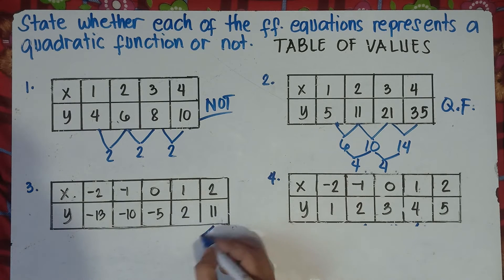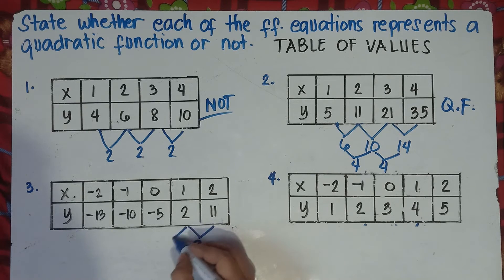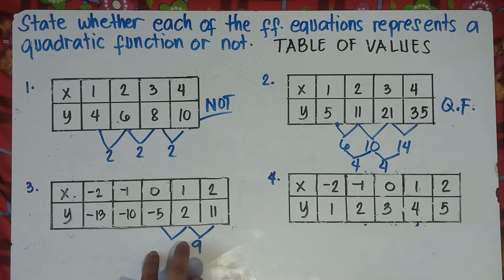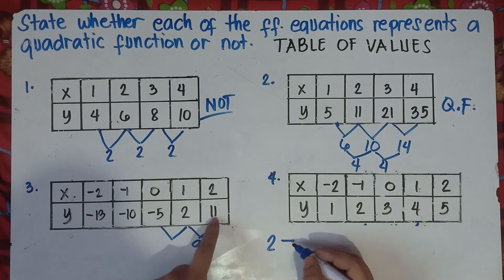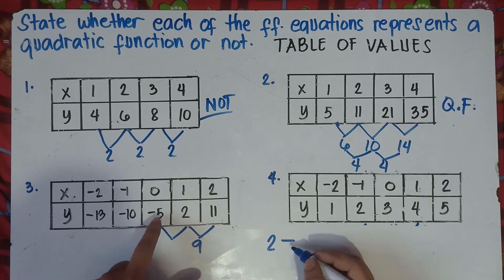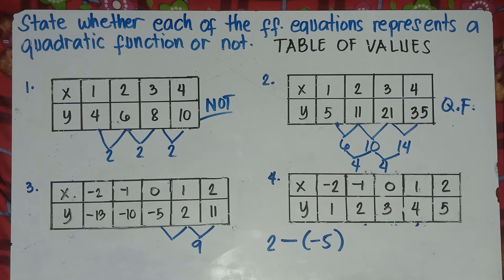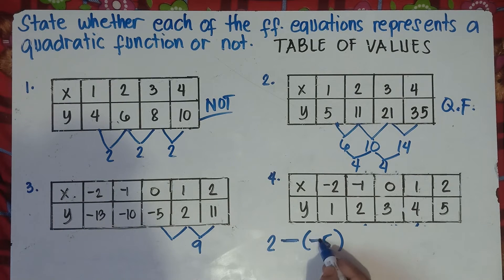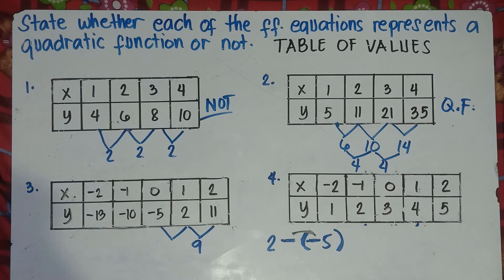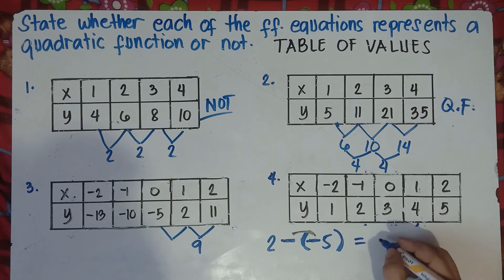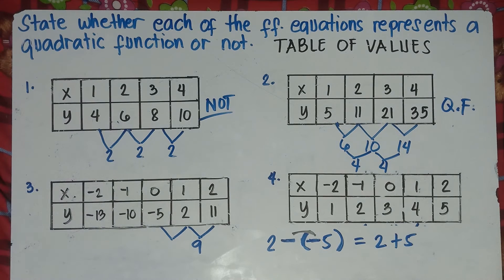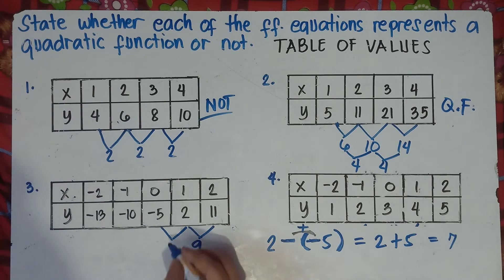We subtract right to left: 11 minus 2 is 9. Next, 2 minus negative 5 — be careful with the signs here. We put parentheses because we're not allowed to have two signs next to each other. So 2 minus negative 5 becomes 2 plus 5, because negative times negative is positive. That gives us 7.